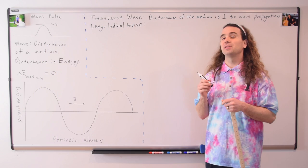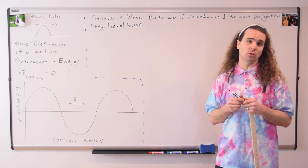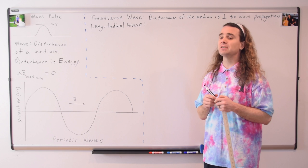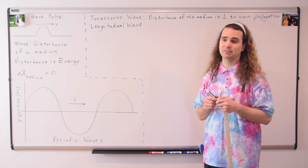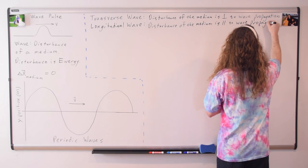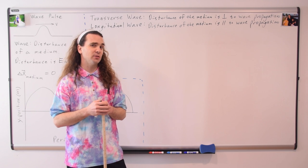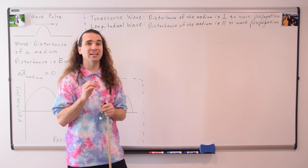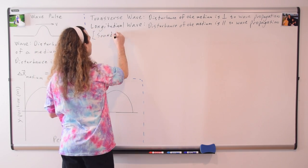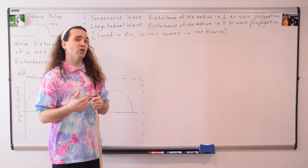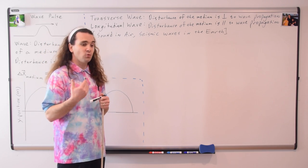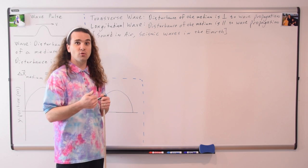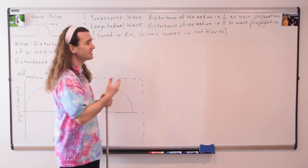The second type of mechanical wave is a longitudinal wave. How is a longitudinal wave different from a transverse wave? In a longitudinal wave, the disturbance of the medium is parallel to the direction of wave propagation. For transverse it is perpendicular, and for longitudinal it is parallel. Examples of longitudinal waves are sound waves in air and the waves that travel through the surface of the planet after an earthquake or a large explosion, which are called seismic waves.